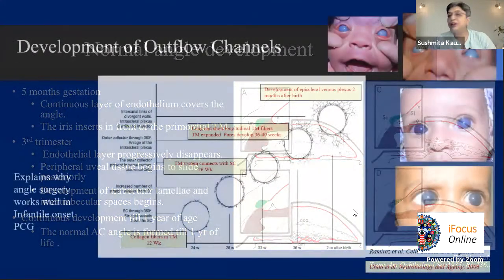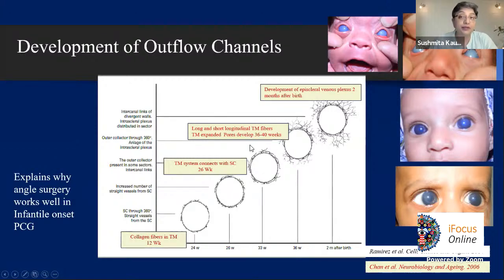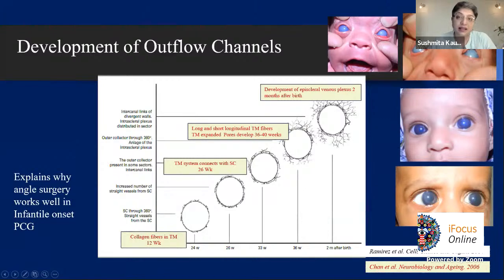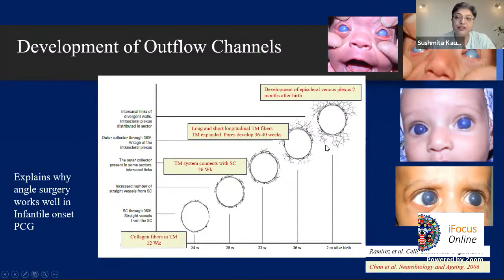It's not enough to have trabecular meshwork developing — you need an outflow channel. The collagen fibers start at about 12 weeks, connect with Schlemm's canal at about 26 weeks, longitudinal fibers expand, and pores develop by 40 weeks. A preterm baby may have an angle that has simply not developed yet. Development of the episcleral venous plexus occurs two months afterward. This explains why goniotomy is successful between 2 and 24 months but less so in younger infants — incising the trabecular meshwork when outflow channels haven't formed won't reduce pressure.